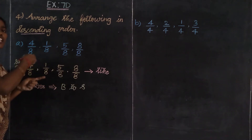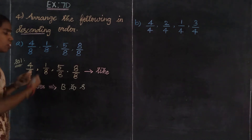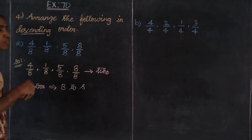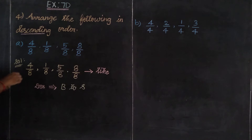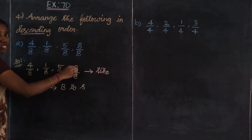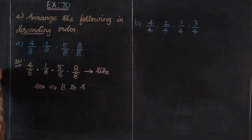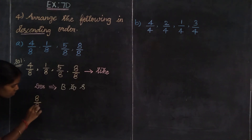The numerator value is the base point for the arrangement. In the 4 fractions, the numerators are 4, 1, 5, and 8. Which one is the greatest? 8 is the greatest, so first we consider 8 divided by 8 as the first fraction.